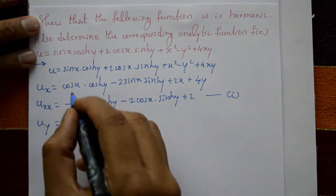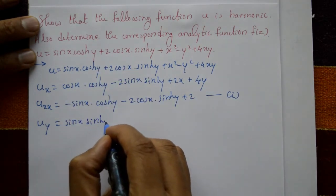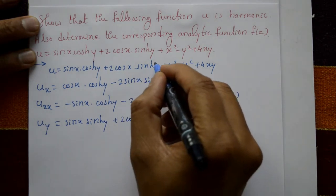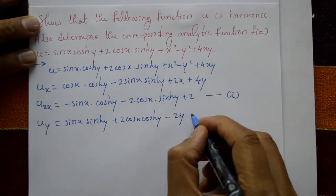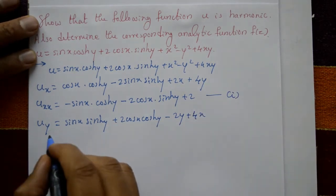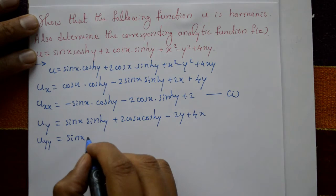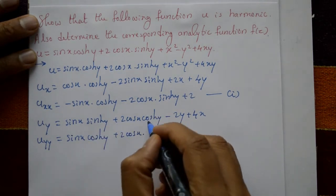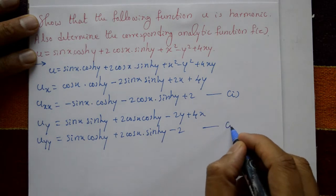Next, differentiate u with respect to y partially, treating x as a constant. sin(x) is constant, differentiating cosh(y) gives sinh(y); plus 2cos(x), differentiating sinh(y) gives cosh(y); this is 0; and minus 2y plus 4x. Again differentiate with respect to y: sin(x) is as it is, differentiating cosh(y); plus 2cos(x) as it is, differentiating sinh(y); minus 2; and this is 0. This is equation number 2.